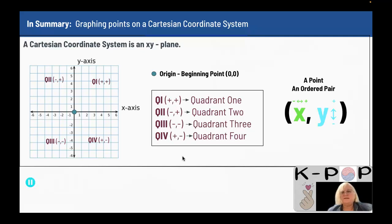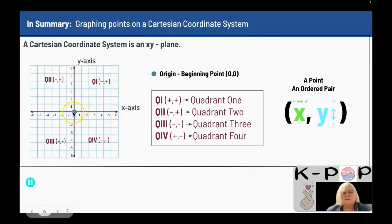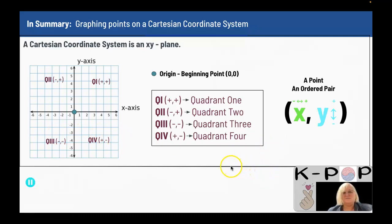In summary: graphing points on a Cartesian coordinate system, which is an xy-plane — your x-axis is always horizontal, going left and right; your y-axis is vertical, going up and down. Up is positive, down is negative. For x, left is negative and right is positive. You have an origin at (0, 0), and four quadrants: quadrant one is positive/positive; quadrant two is negative/positive; quadrant three is negative/negative; and quadrant four is positive/negative.